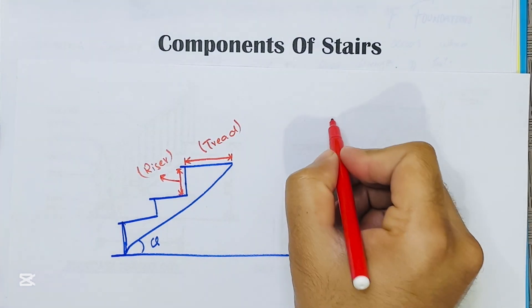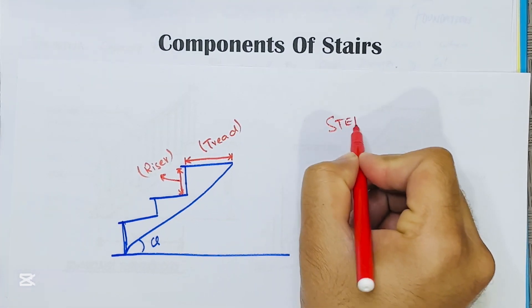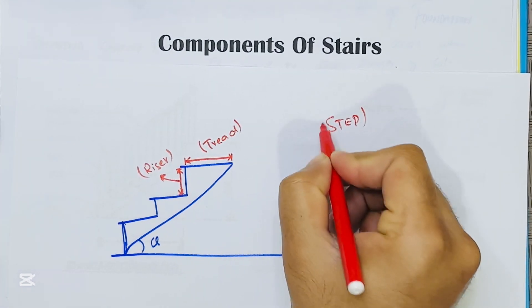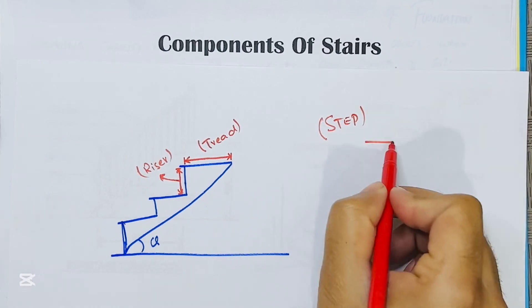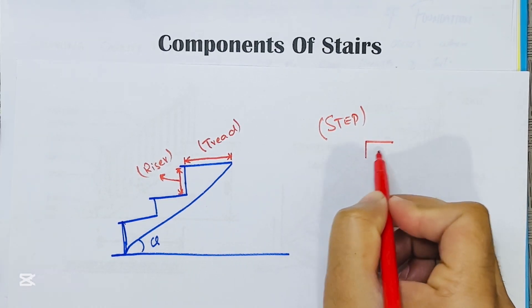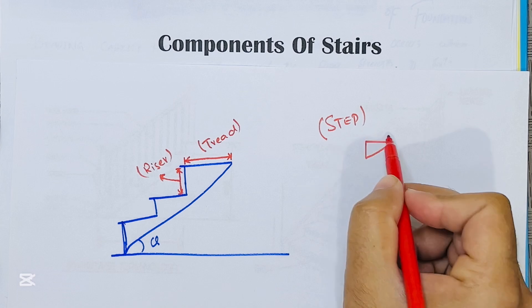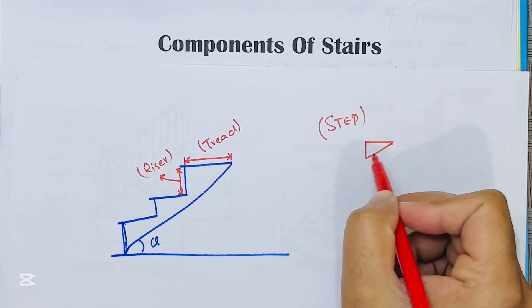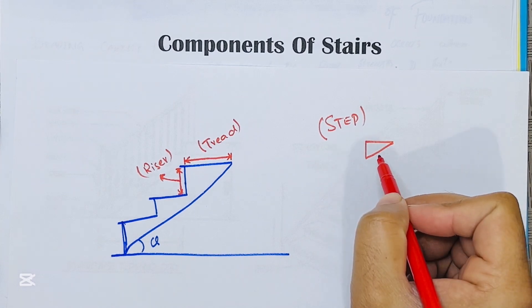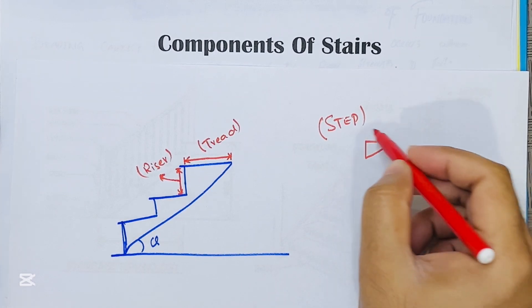Now, what is a step? A step is the combination of tread and riser which permits ascent and descent from one floor to another.